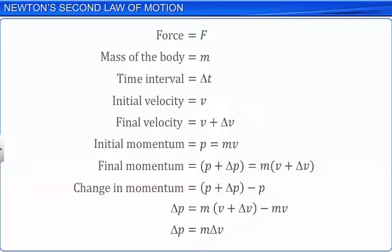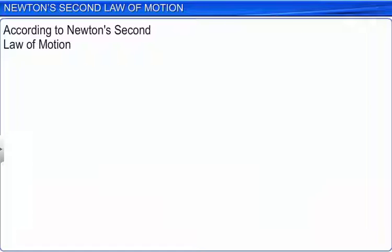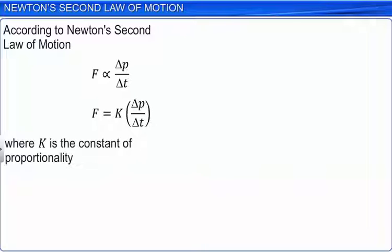According to Newton's second law of motion, force is proportional to the rate of change of momentum. Bringing in the constant of proportionality K, the equation becomes F equals K multiplied by delta P by delta T. When delta T tends to zero, delta P by delta T equals dP divided by dT. This makes the equation F equals K multiplied by dP by dT.